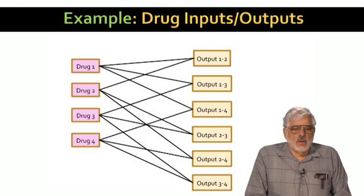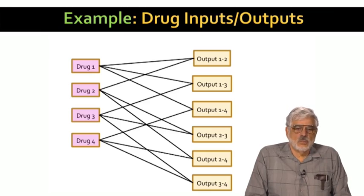Here's what the many-to-many mapping looks like between inputs and outputs for the drug interaction problem with four inputs. In this case, there are six outputs, each corresponding to one of the six pairs of drugs.